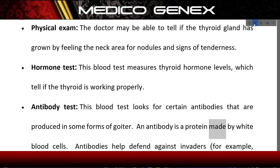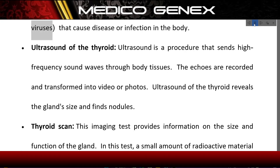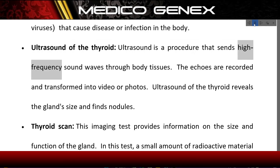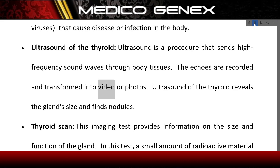An antibody is a protein made by white blood cells. Antibodies help defend against invaders — for example, viruses — that cause disease or infection in the body. Ultrasound of the thyroid: Ultrasound is a procedure that sends high-frequency sound waves through body tissues; the echoes are recorded and transformed into video or photos. Ultrasound of the thyroid reveals the gland's size and finds nodules.